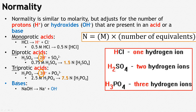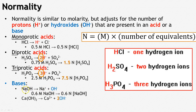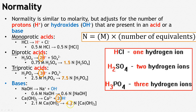For bases, the same idea applies. Sodium hydroxide gives one mole of hydroxide per mole, so molarity equals normality. But calcium hydroxide dissociates to form two hydroxide ions, so 2.1 molar Ca(OH)₂ becomes 4.2 normal — you multiply by two.